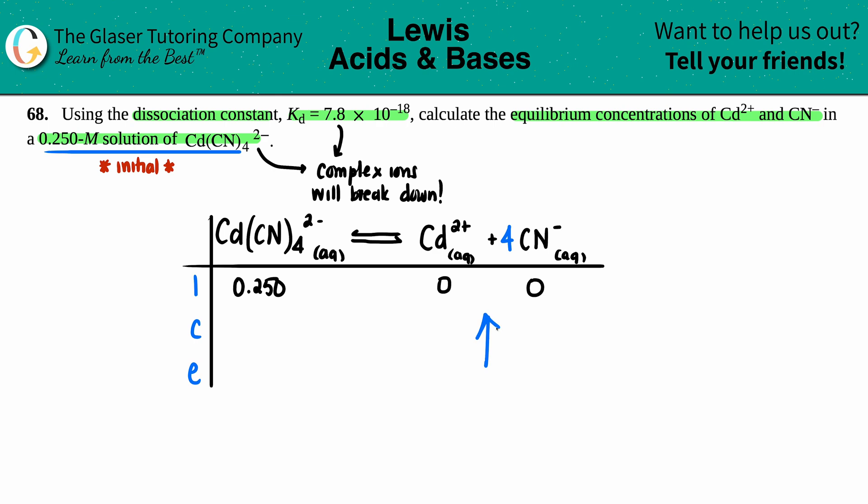C stands for change in concentration. If you're starting with nothing, you can only go up, so these are pluses and these are minuses. The complex ion is minus x. Since there's one cadmium, it's plus x. Since I have four cyanides, this would be plus 4x. At equilibrium: 0.250 minus x, x, and 4x.